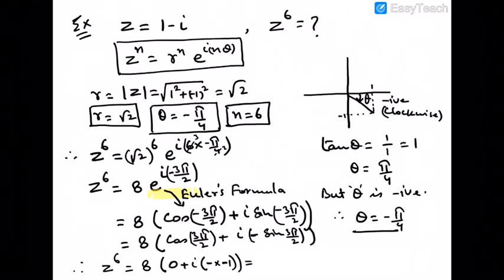Cos 3 pi by 2 is 0 and sin 3 pi by 2 is minus 1, so we get 8 times 0 plus i, which is 8i. Therefore z to the power 6 equals 8i.